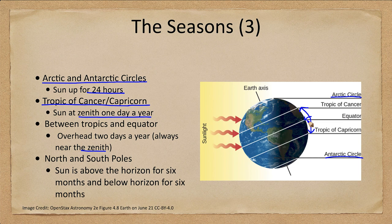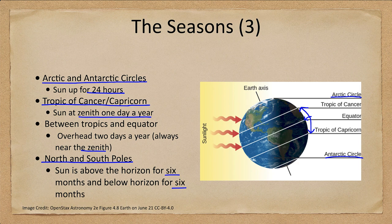If you were exactly at the equator, then day and night would always be 12 hours long. The closer you get to the equator, the less variation there is in daylight; the further you get from the equator, the more variation there is. If you go to the north or south pole, then the Sun is above the horizon for six months and below the horizon for six months. For the North Pole, the Sun would rise on March 21st and would set six months later, remaining constantly up for that entire time. At the South Pole, the same thing occurs — when the Sun sets at the North Pole, it rises at the South Pole and remains above the horizon for six months.